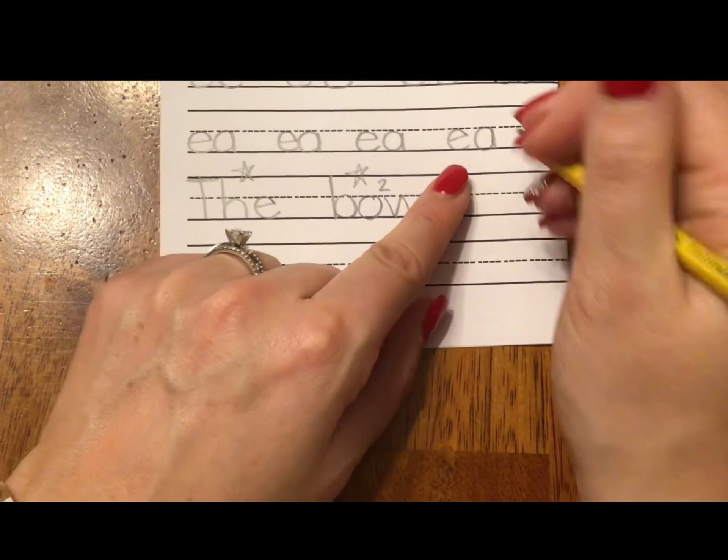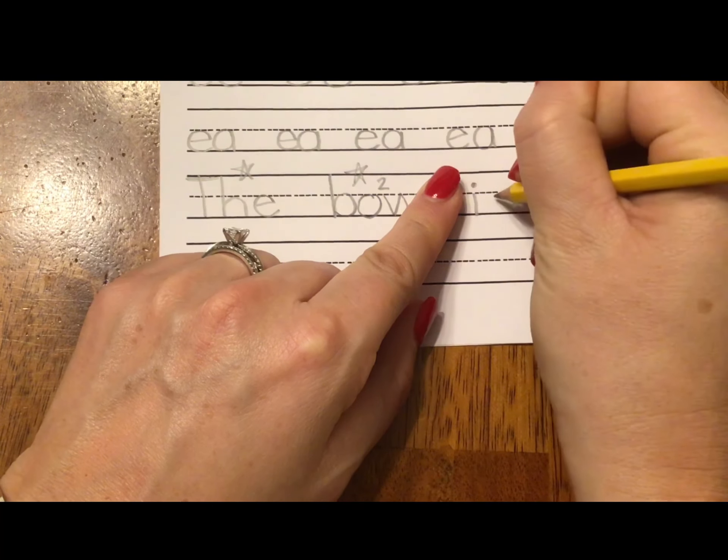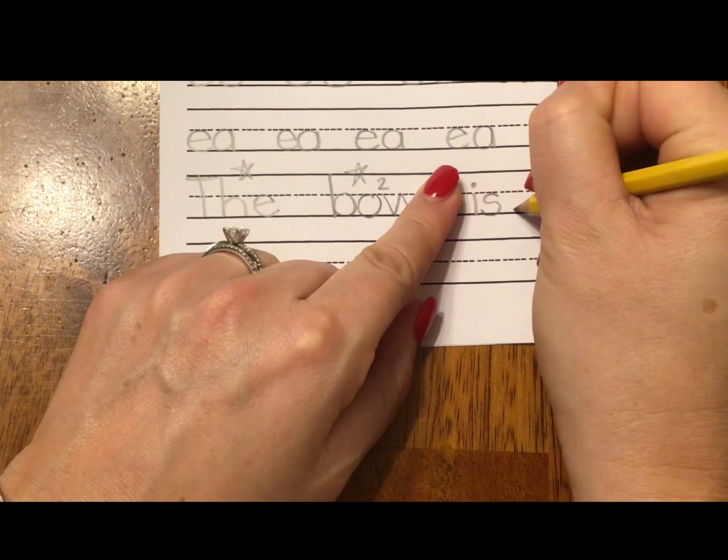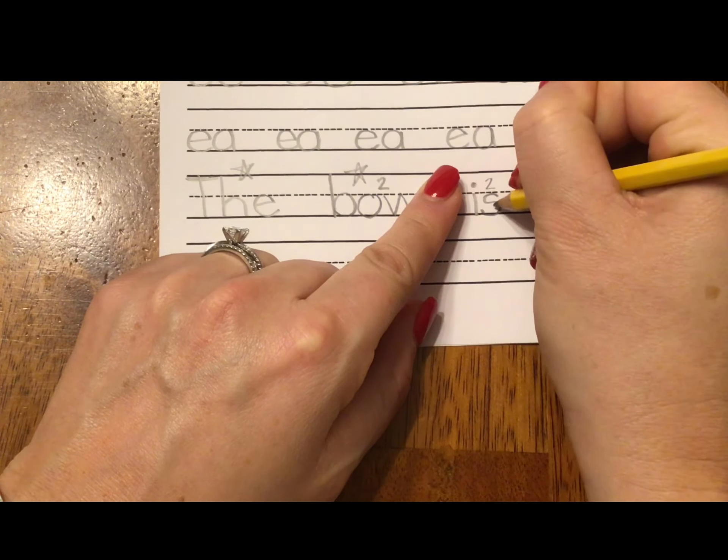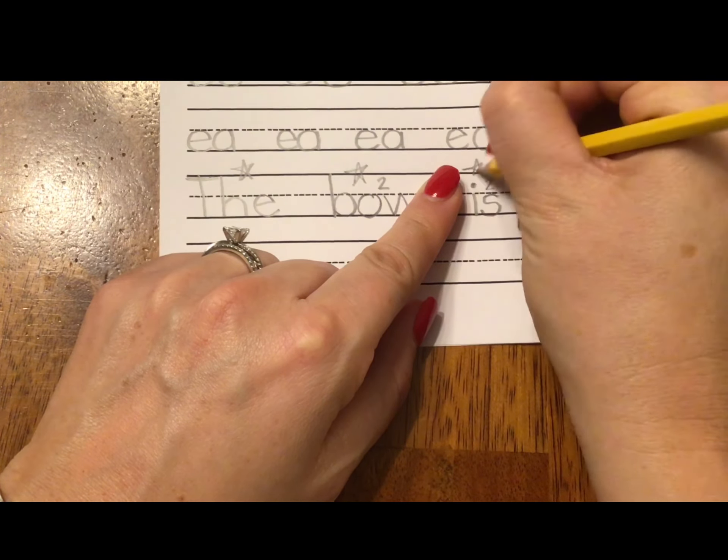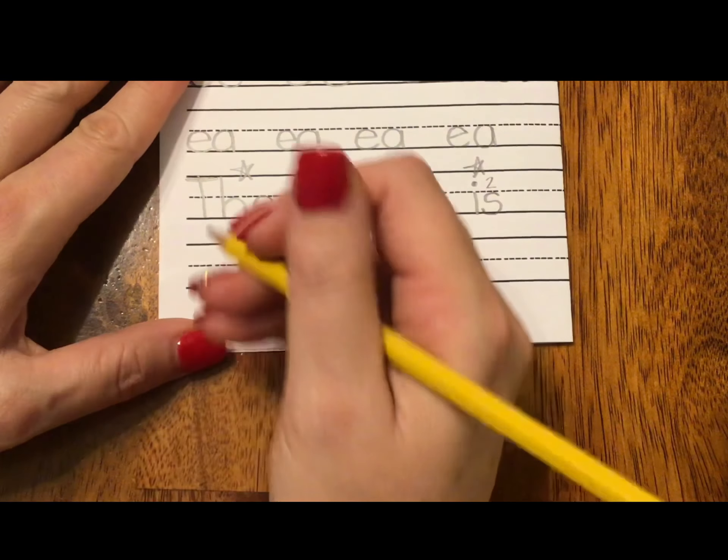The bow is. I said use I, I. And I said use S, Z, is. This is the second sound of S. If you wrote I, S, is, give yourself a star or a smiley.